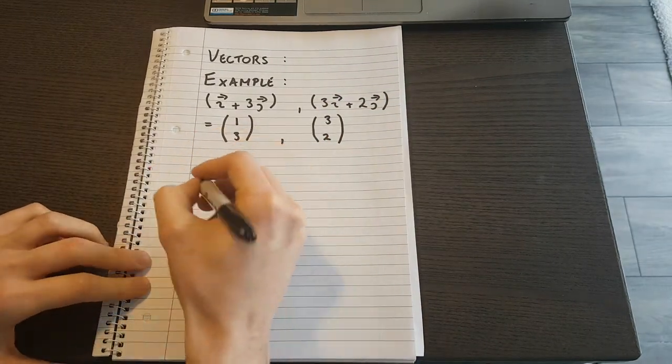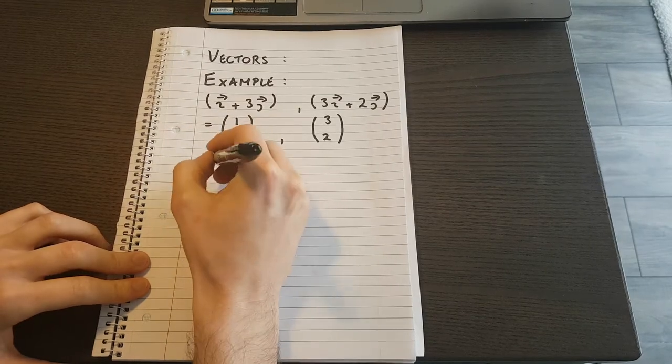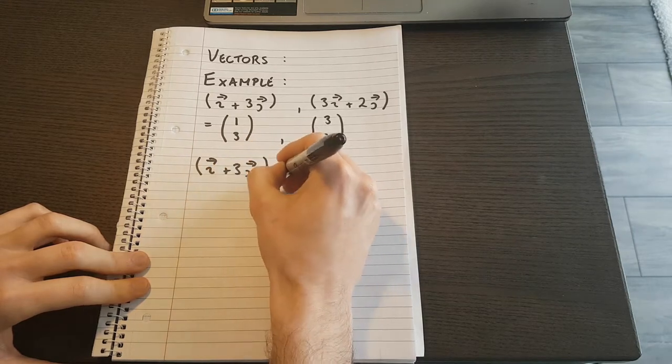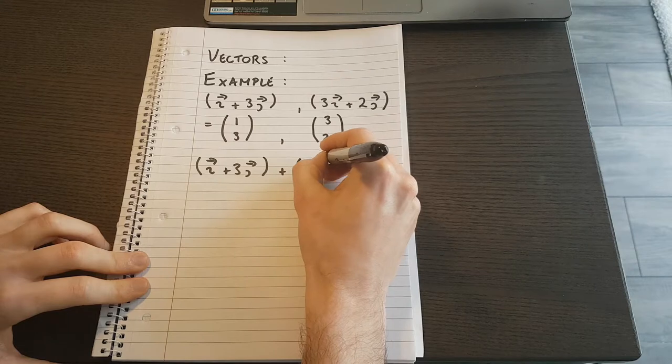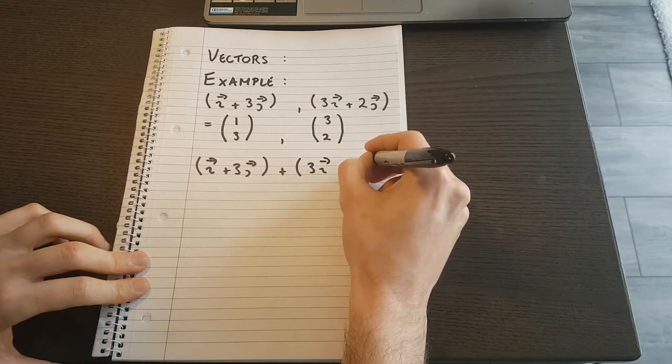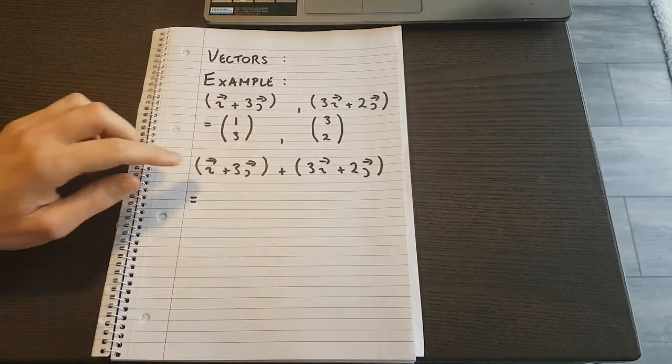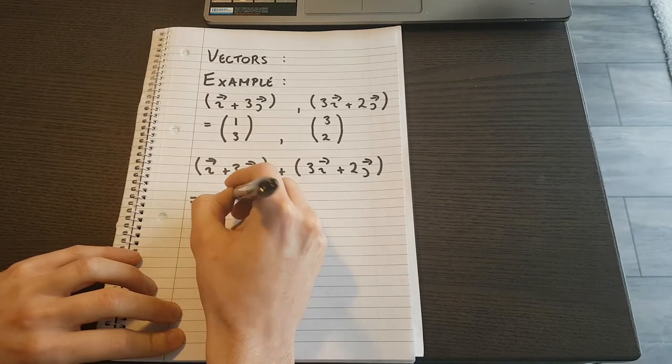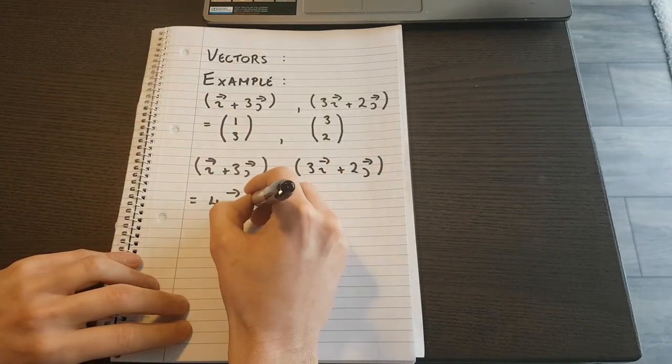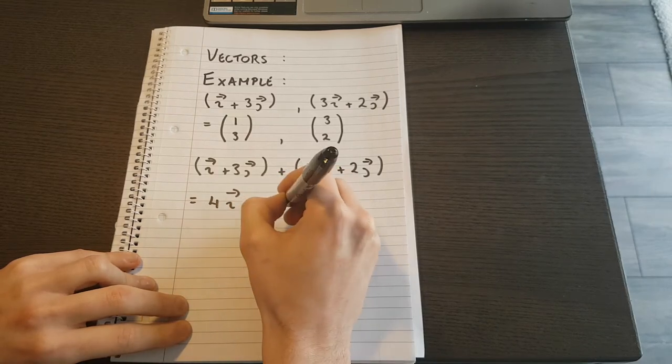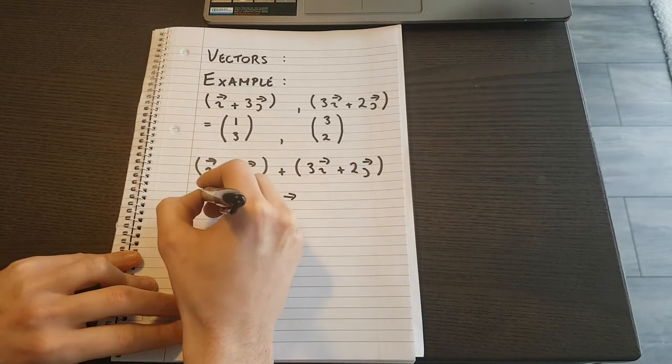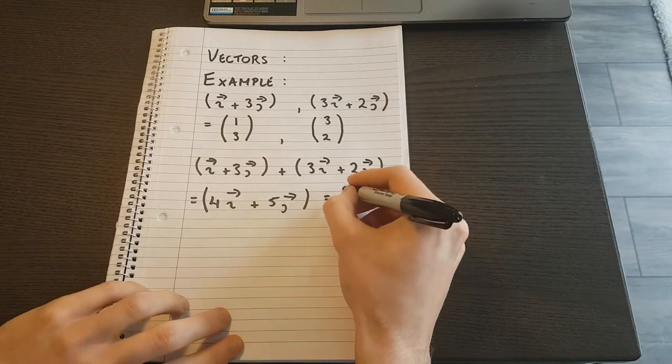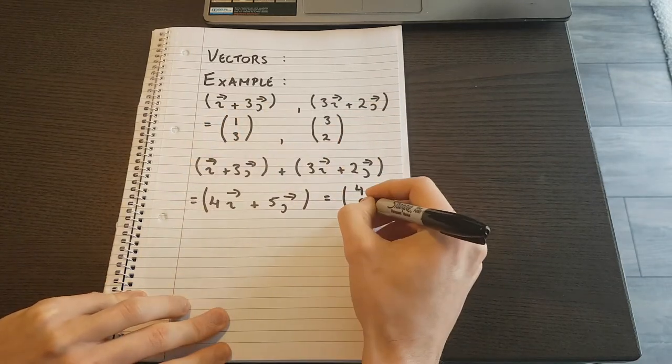And if we want to add these together, what do we end up with? Well, we add the i parts, so there's 1i here and 3i's here, that gives me a 4i. And I have a 3 and a 2, and that gives me a 5j. And that would be 1 plus 3 would give me a 4, and 3 plus 2 would give me a 5.